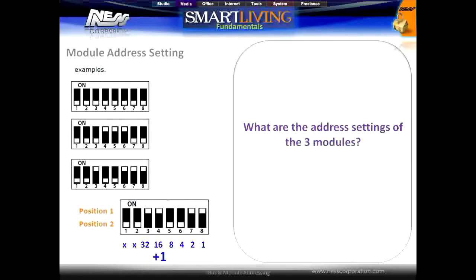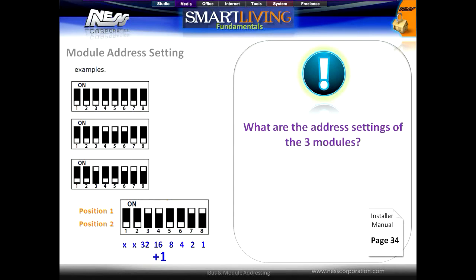Here are some examples of address settings. With all switches off the value is 0; adding 1 gives an address of 1. With switches 4, 5 and 6 on, the total is 28; adding 1 gives an address of 29. Finally, with switches 3, 6, 7 and 8 on, the total is 39; adding 1 gives an address of 40.